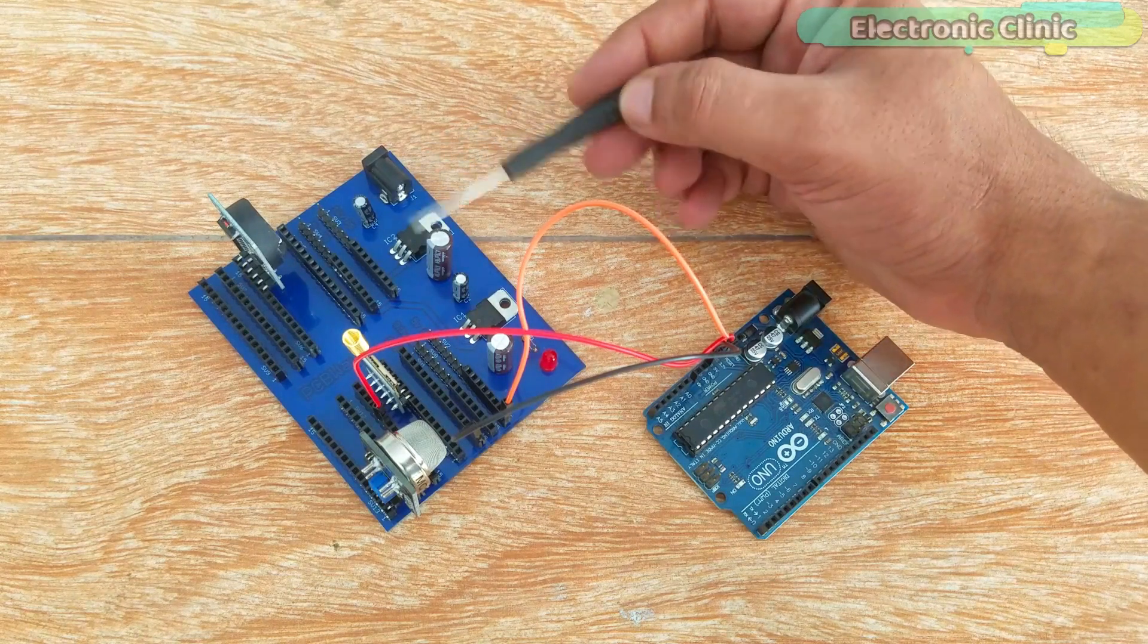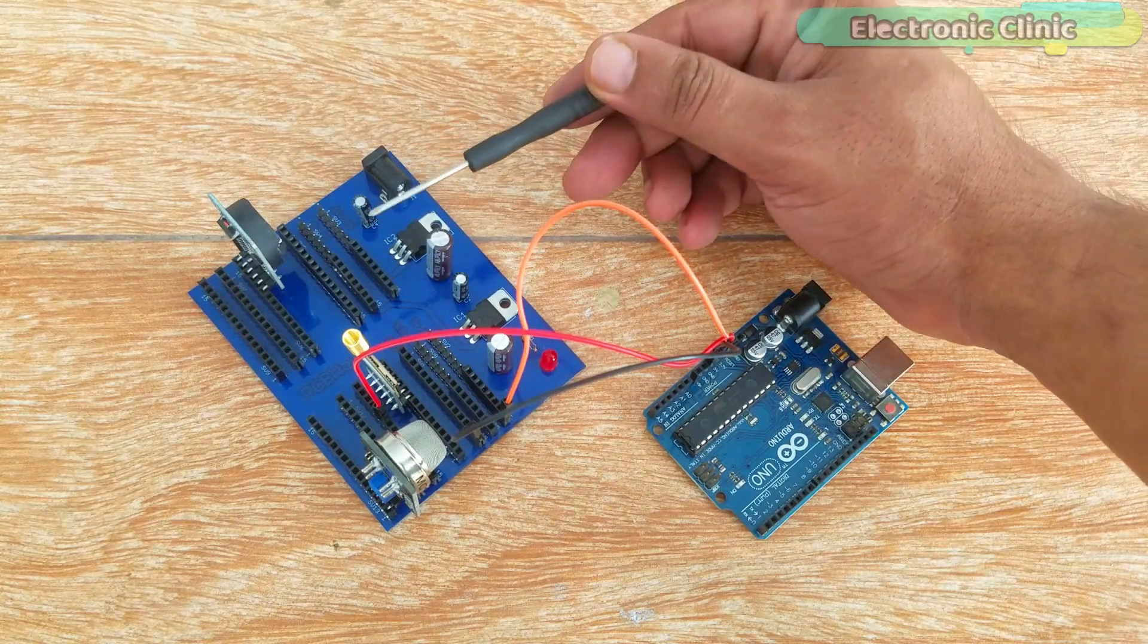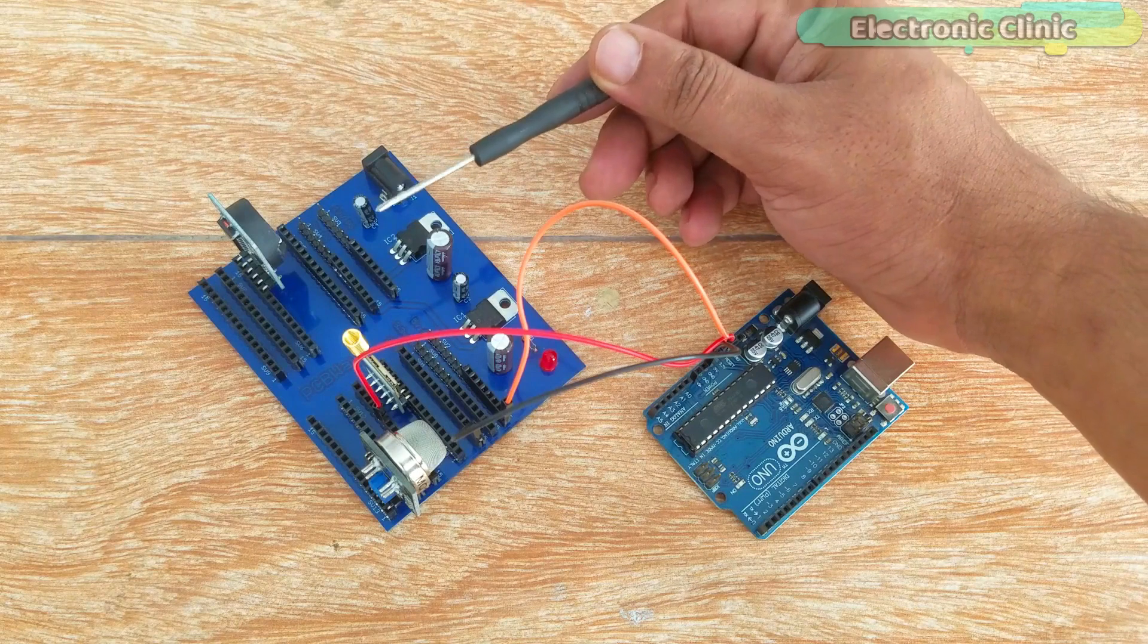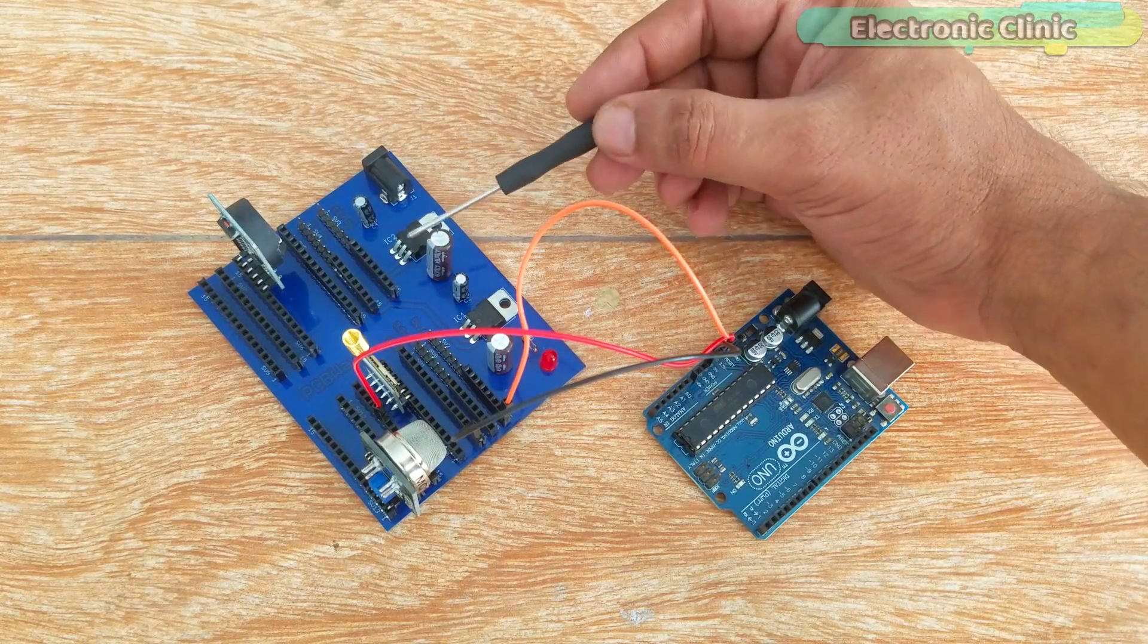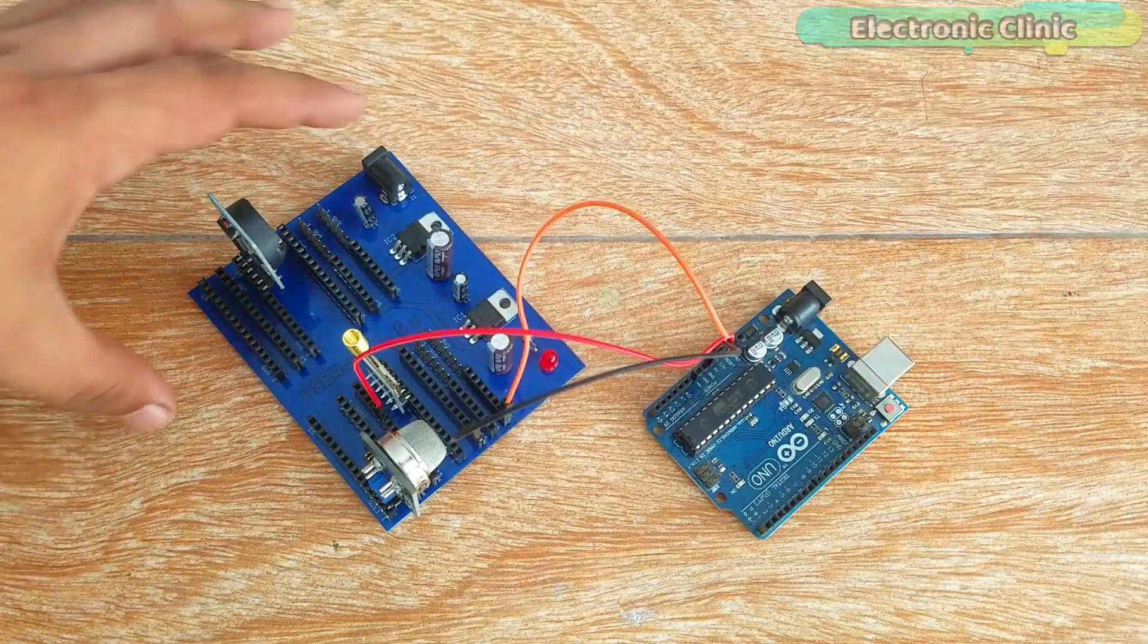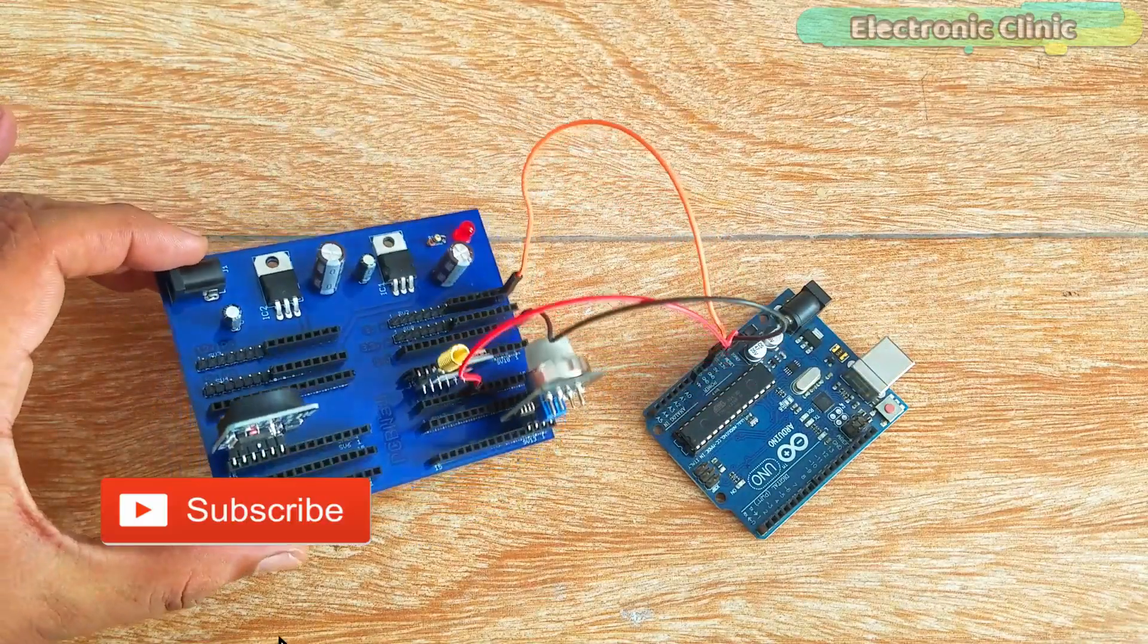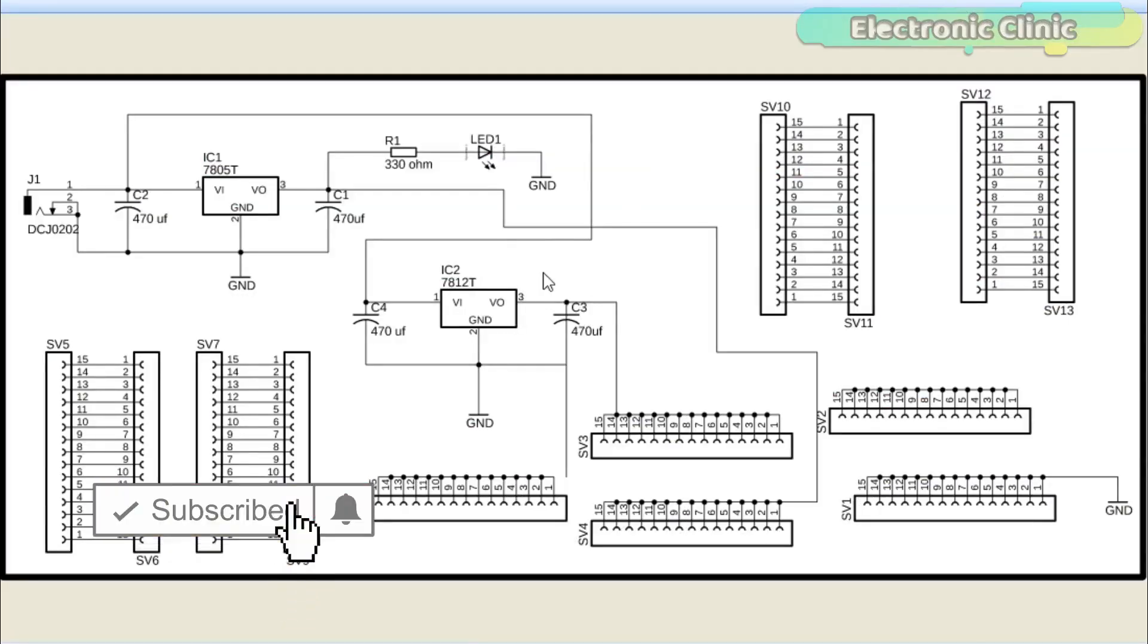It has many advantages. I believe every electronics lover should have this. Now I will use this power supply board in my upcoming projects and tutorials. Now let's have a look at its circuit diagram. This schematic is designed in KiCad Eagle 9.1.0 version. If you want to learn how to make schematic and PCB then watch my tutorial. The link is given in the description.